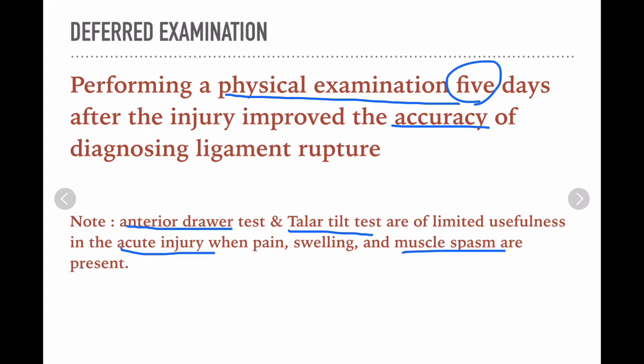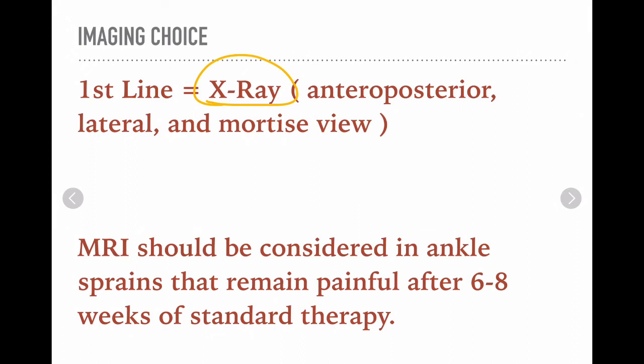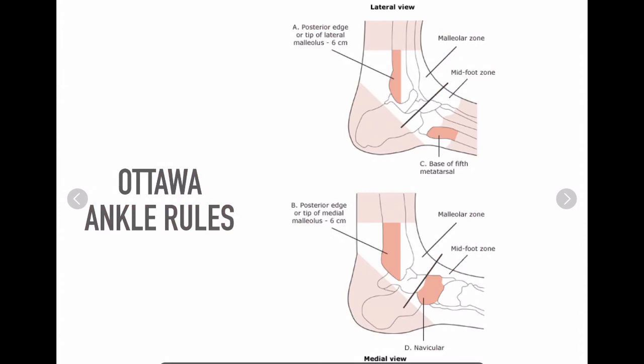Imaging modality of choice: first-line is X-ray with anteroposterior, lateral, and mortise views of the ankle joint. MRI should be considered in ankle sprains that remain painful after six to eight weeks of standard therapy. Ottawa ankle rules: a series of ankle radiograph films is required only if there is pain in the malleolar zone.